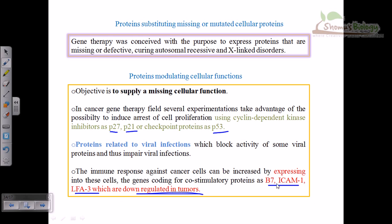Downregulation of B7 and ICAM-1 inside tumor cells can lead to tumor propagation. So if we inject genes for producing proteins like B7, ICAM-1, and LF-HC, it will increase the immune response of the organism and halt tumor cell propagation.